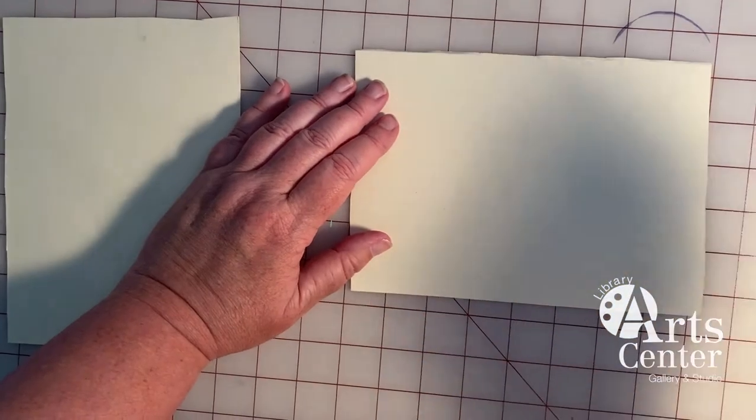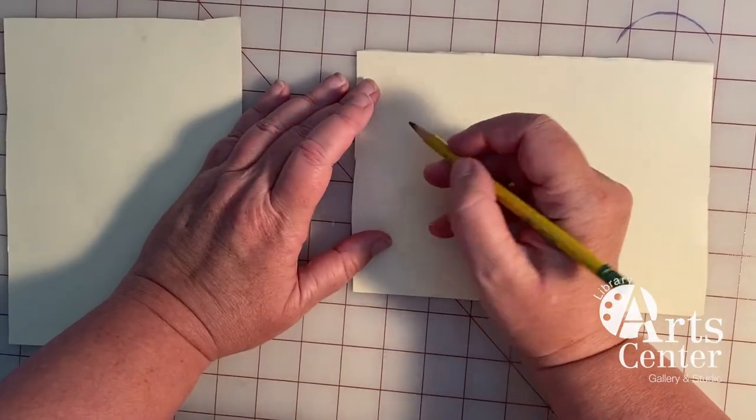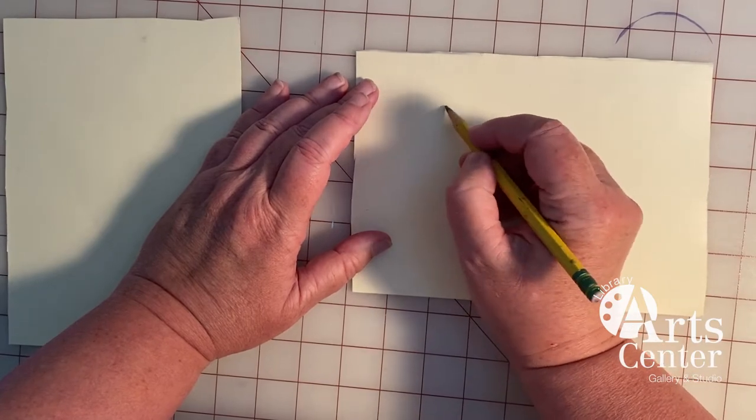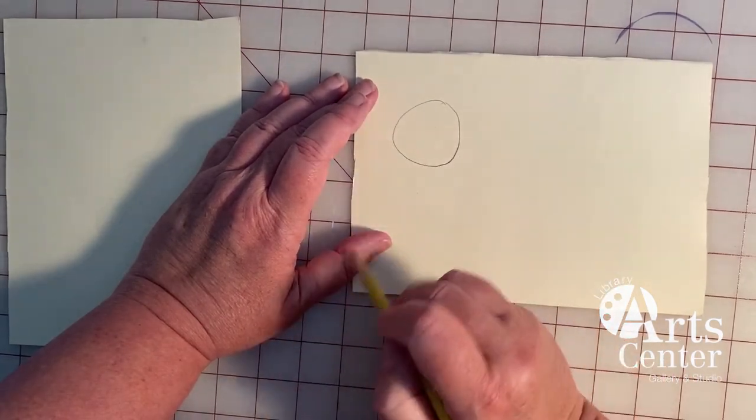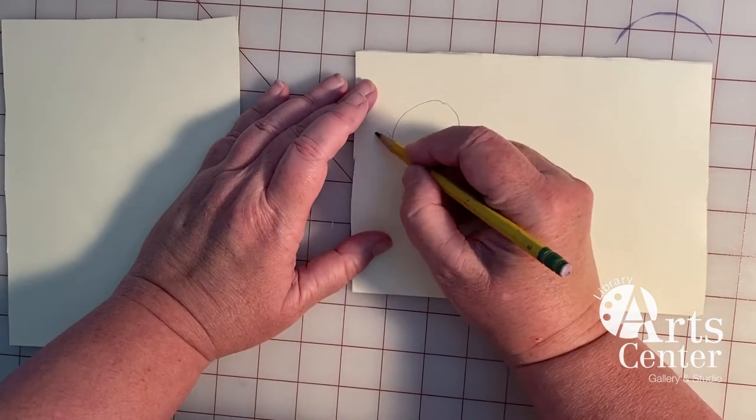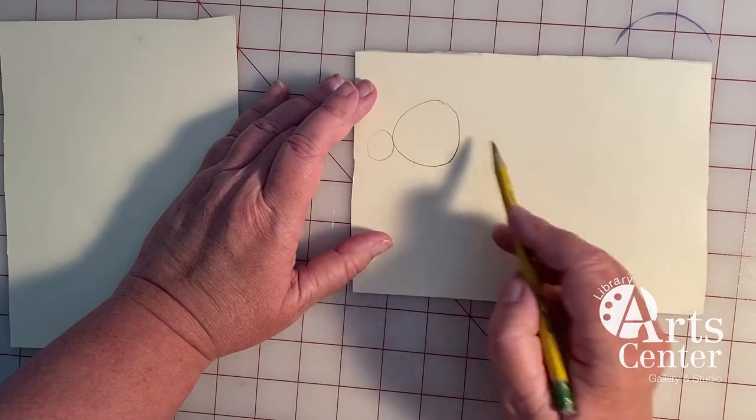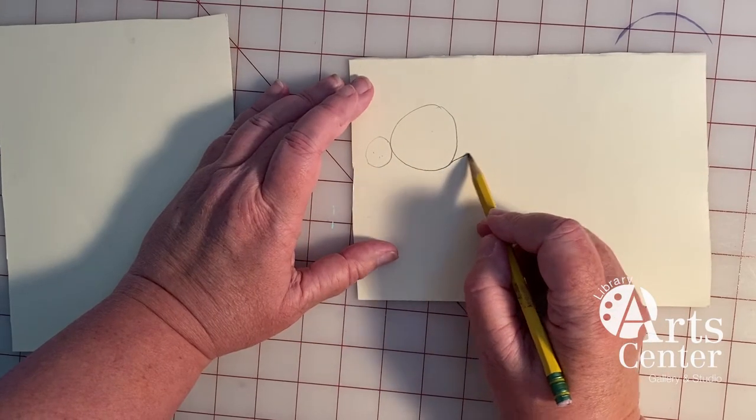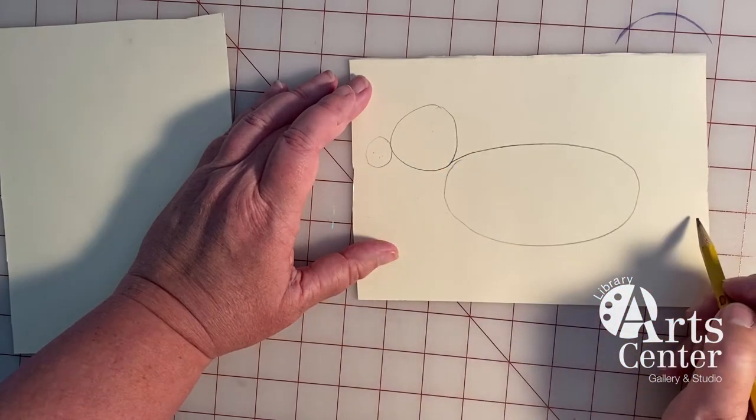All right, so now we're going to draw our dog. I'm going to start by drawing a circle. That is going to be the head. We're going to draw another circle that's going to be the nose and the mouth of the dog. Now we're going to come down here. We're going to draw a big oval. That's going to be the body of our dog.